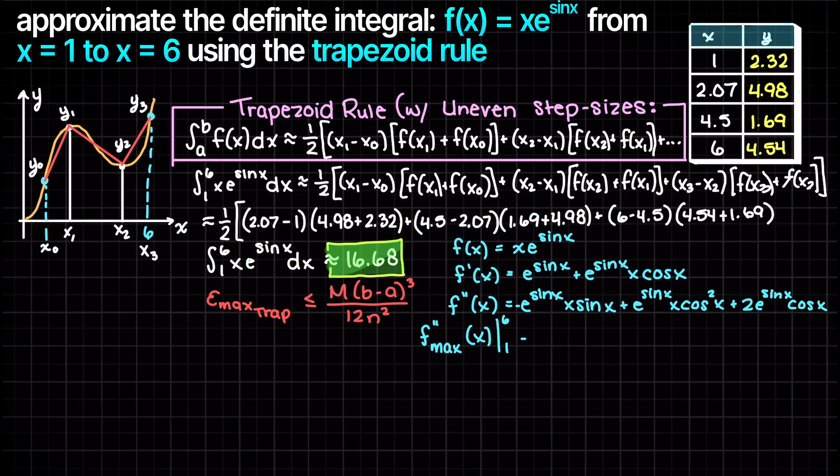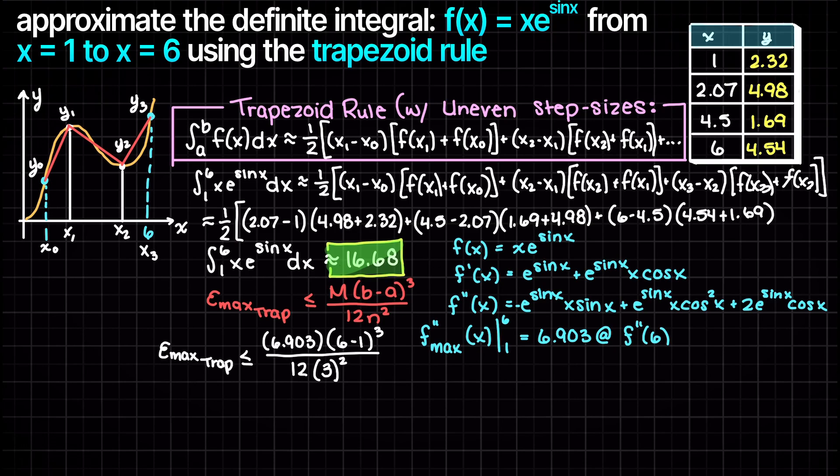Plugging all this information into our error formula is obviously huge, but this makes sense since we only have very few trapezoids trying to make an approximation over an area with a lot of curves.